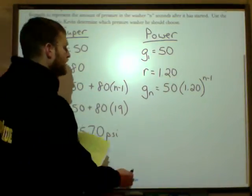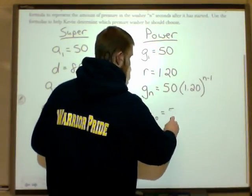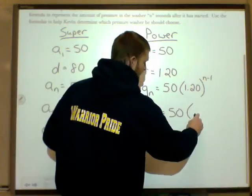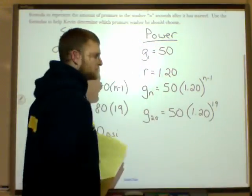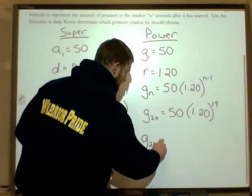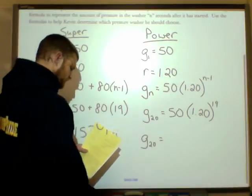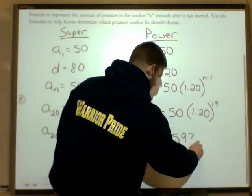Whereas the Powerwash, its 20th term again is going to be that 50 times 1.20. But again, n minus 1 or 20 minus 1 is 19. You do the math, crunch that out through your calculator, obviously not doing that one in your head. And we get 1,597.4 psi.